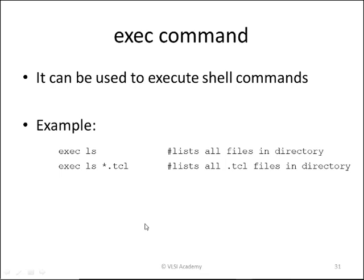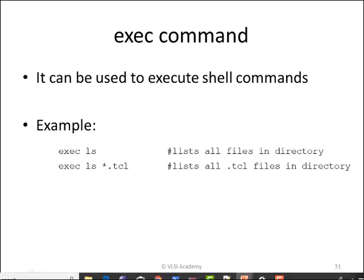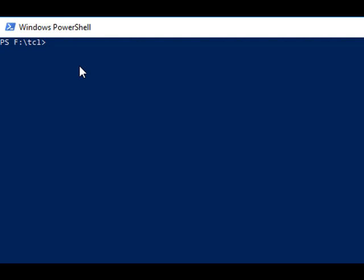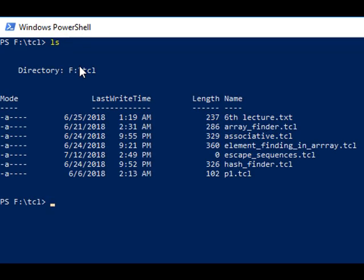The format is: exec followed by the shell command. Here we use 'ls' as the shell command, which will list all the files in the directory. 'ls *.tcl' will list all the TCL files in the directory. To use it inside TCL, you have to use exec along with it.